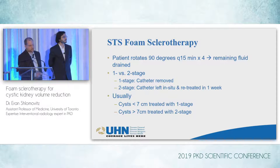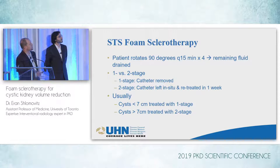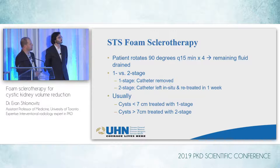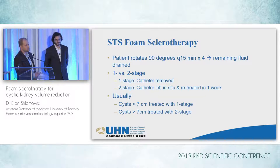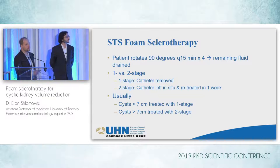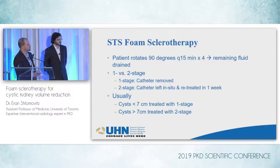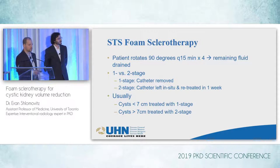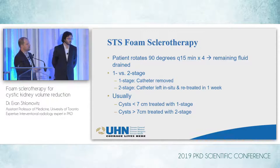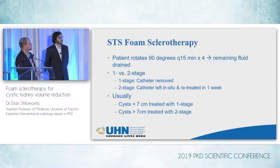This is our current protocol. Patients rotate about 90 degrees every 15 minutes for about an hour. If the cysts are less than about 7 centimeters — an arbitrary cutoff we've decided on that seems to have benefit — we treat them as a one-stage procedure: the patient comes in, has the procedure done, catheter is removed, and they go home the same day without anything. If cysts are bigger than 7 — now probably bigger than 8 centimeters, since we're using higher STS doses — we do a two-stage procedure: they come in, have the drain inserted, have the first sclerotherapy session, go home with a drain and bag, and come back several days later for a second session before everything is removed.